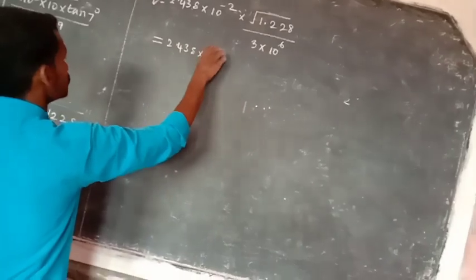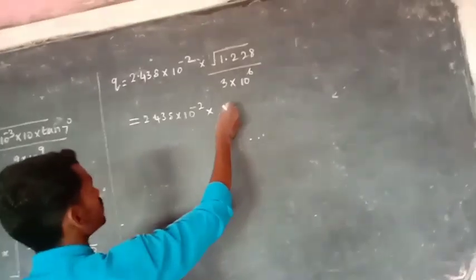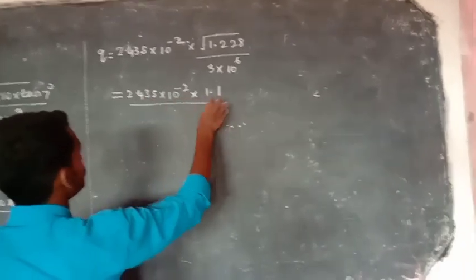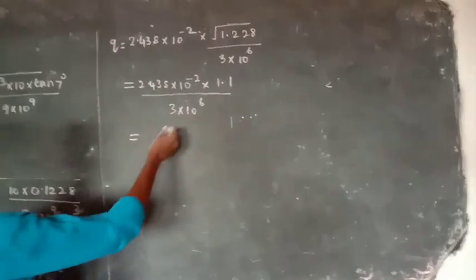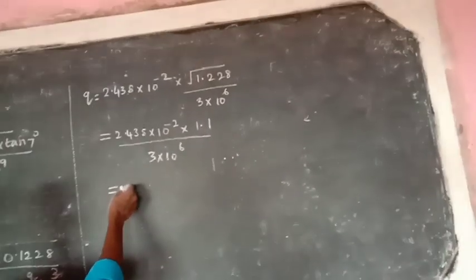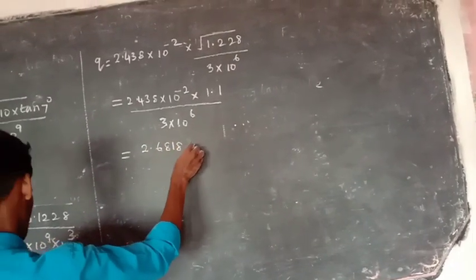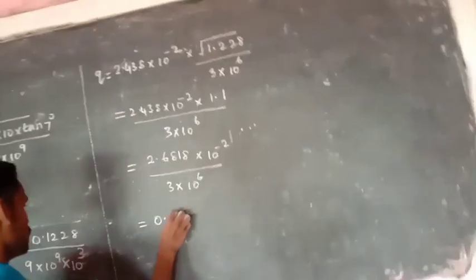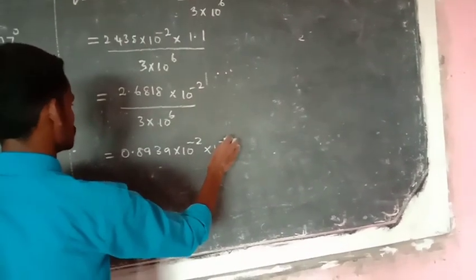2.5388 times 10 power minus 2. At the root of 1.5388, the result is 2.5388. Then 1.5388 divided. Root of 1.5388 is 1.5388. Results: 2.6818 into 10⁻², then 0.3818 into 10⁻², giving 0.89392. Next, 5.998 into 10⁻², then 5.994 and 3.996.